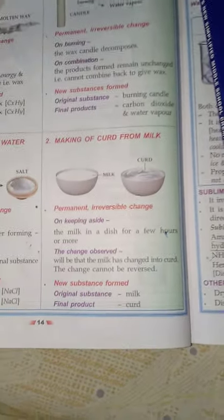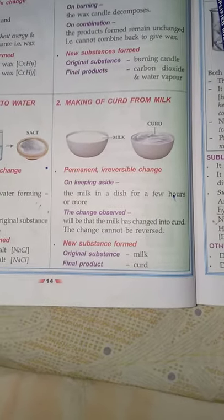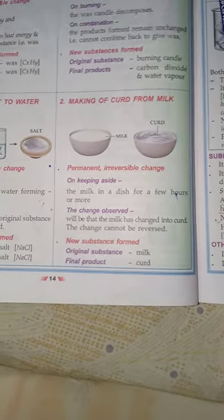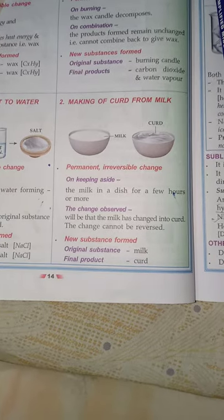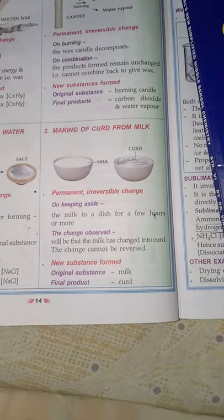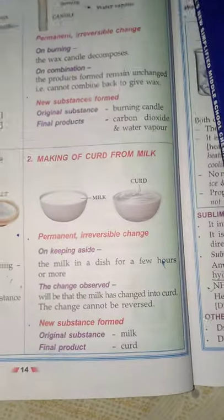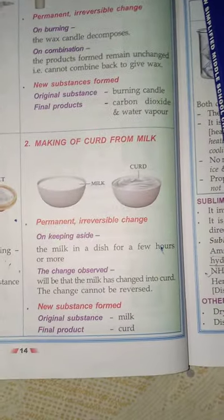Moving to making of curd from milk. It is a permanent and irreversible change because when you keep milk in a dish for a few hours, the milk changes to curd. This change cannot be reversed — the original substance was milk and the final product is curd. These are the examples that show the comparison between physical and chemical change.